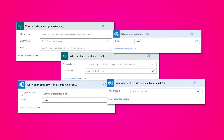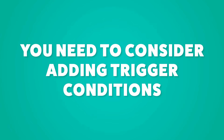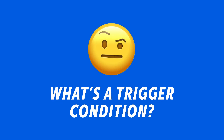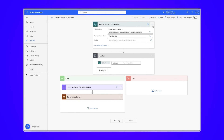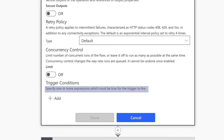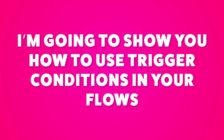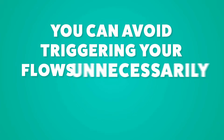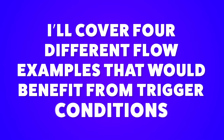If you're using an automated cloud flow trigger, you need to consider adding trigger conditions. Trigger conditions can be set in most flow triggers, and these conditions must be true for the trigger to fire. In this Power Automate tutorial, I'm going to show you how to use trigger conditions to control when your flows trigger. If your plan has flow run limits, you can avoid triggering your flows unnecessarily by using trigger conditions.